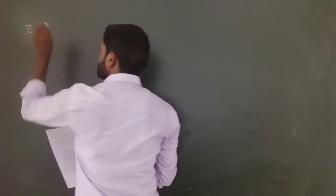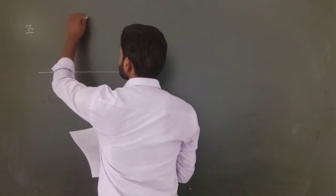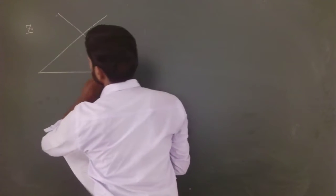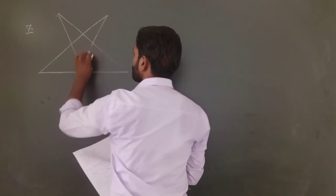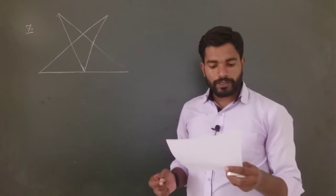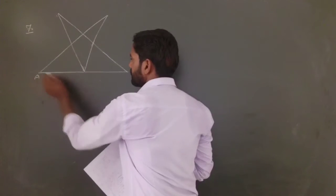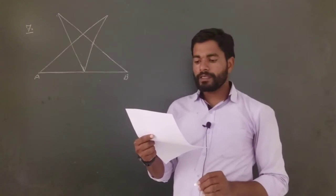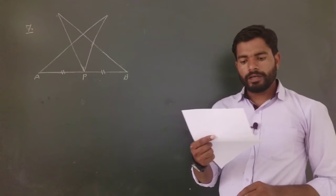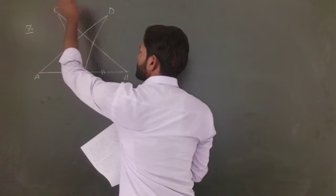Question 7 has a structure given like this. AB is a line segment and P is its midpoint. D and E are points on the same side of AB.